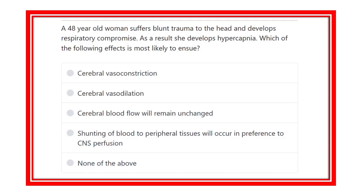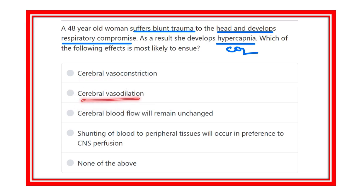Hello everyone, welcome to another question and answer session — this is the physiology portion. A 40-year-old suffers blunt trauma to the head and develops respiratory compromise. As a result, she develops hypercapnia, meaning increased carbon dioxide levels. Which of the following effects is most likely? Options are: cerebral vasoconstriction, cerebral vasodilation, cerebral blood flow will remain unchanged, or shunting of blood to peripheral tissue in preference to CNS perfusion.